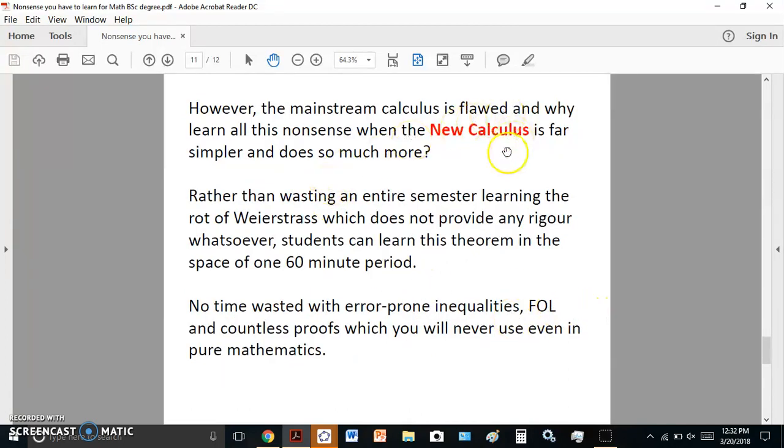So the mainstream calculus is flawed and you have to learn all this nonsense. Rather than wasting an entire semester learning the route of Weierstrass, this entire knowledge can be learned in 60 minutes. And there's no time wasted with error-prone inequalities, first-order logic, and countless proofs which you will never use, even in pure mathematics.